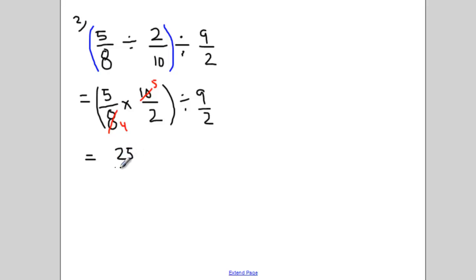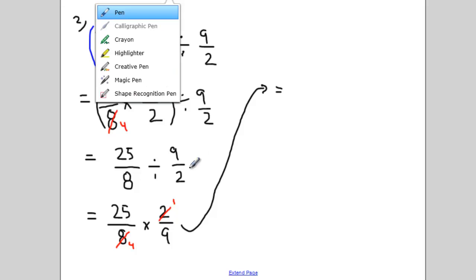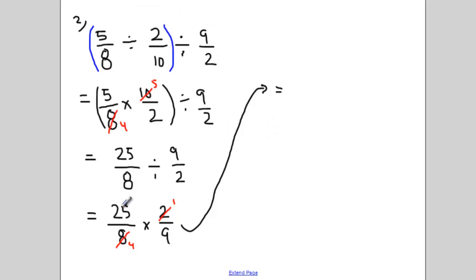So when I simplify the first two terms, I end up with 25 over 8 divided by 9 over 2. Now I can flip the last term and change it to multiply. And let's try and reduce first. I know that 2 divides evenly into itself and into 8. And 25 times 1 is just 25. 4 times 9 is 36. I think that fraction might be as reduced as I can make it, but we can check if you use that fraction button on your calculator. And yes, that is as reduced as we can make this.